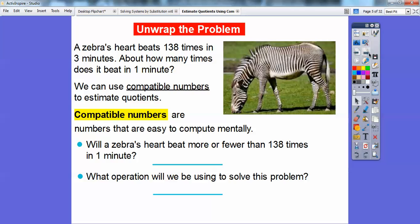Will a zebra's heart beat more or fewer than 138 times in 1 minute? Well, if it beats 138 times in 3 minutes, and 1 minute is less than 3 minutes, it's going to be fewer. What math operation will we be using to solve this problem? We're going to use division. It'll be fewer times in 1 minute because it beats this many in 3 minutes, so in 1 minute it should be fewer, and we're going to divide.